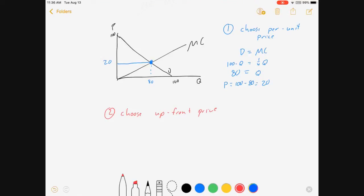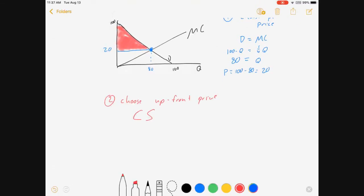I'm basically asking how much extra willingness to pay does this consumer have, and that means I'm talking about consumer surplus. Now as a review, consumer surplus is everything below the demand curve and above the price. So with a straight line demand curve like this, that's easy.